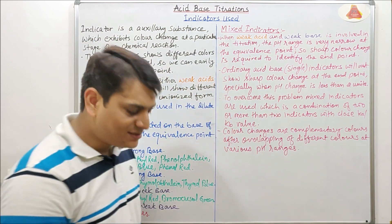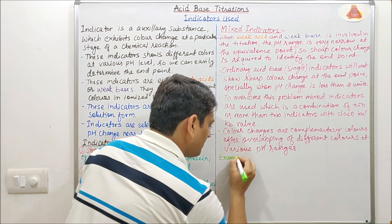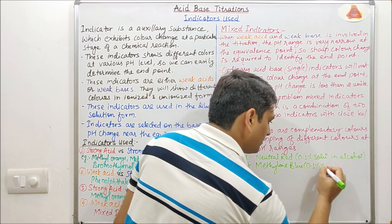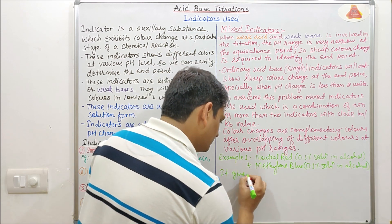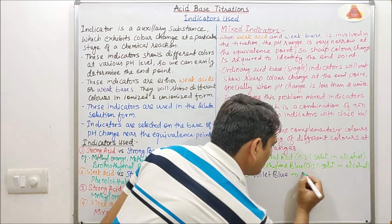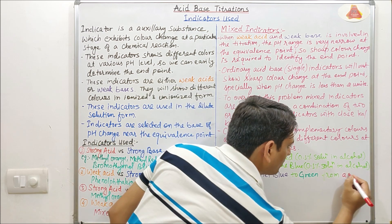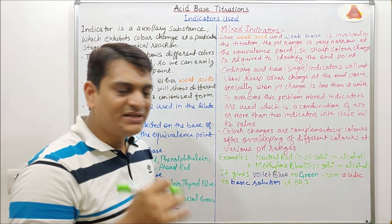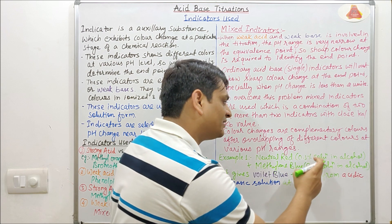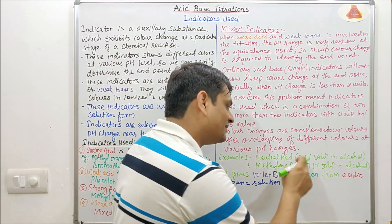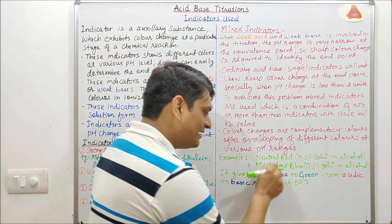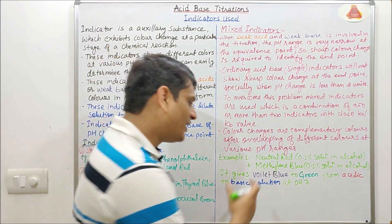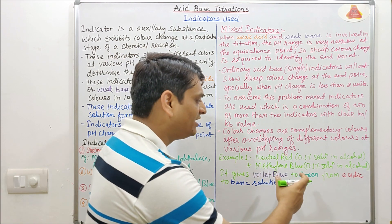Now coming to examples of mixed indicators. In the first example, we have taken neutral red — that is a 0.1% solution in alcohol — plus methylene blue, also a 0.1% solution in alcohol. This mixture gives a violet-blue to green color change from acidic to basic solution at pH 7. It means this indicator will show violet-blue color in acidic medium and will convert to green color when it reaches basic pH.